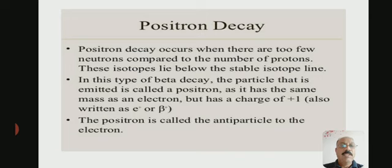In this type of beta decay, the particle emitted is called a positron. It has the same mass as an electron but has a charge of plus 1. It is written as e+ or beta plus. The positron is the anti-particle to the electron.